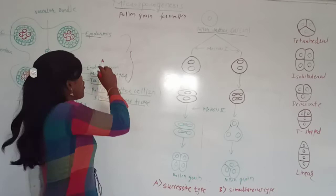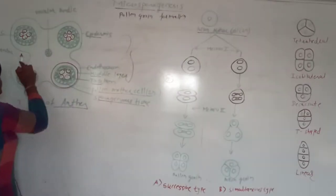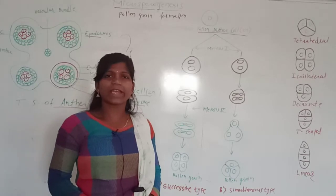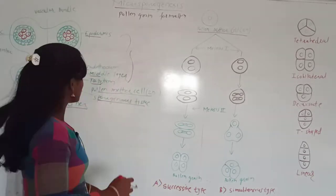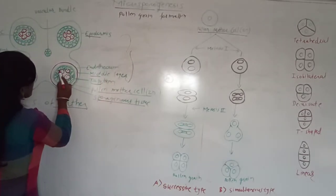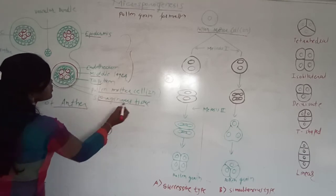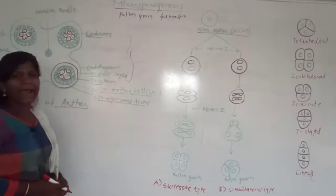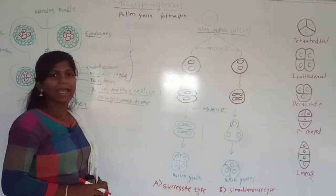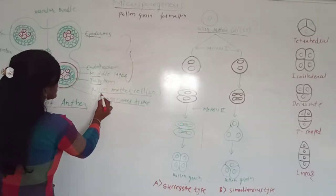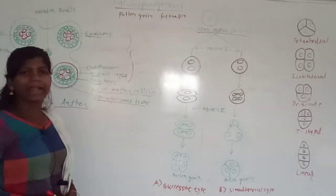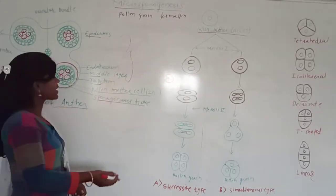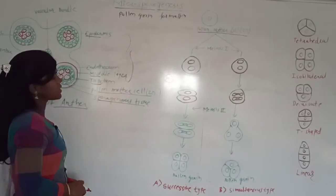These pollen sacs are four in number — 1, 2, 3, 4. Therefore, it is called a tetrasporangiate anther. In those pollen sacs, sporogenous tissue is present. That sporogenous tissue undergoes mitotic division and produces pollen mother cells, which are diploid in number. So, that sporogenous tissue directly acts as pollen mother cells.